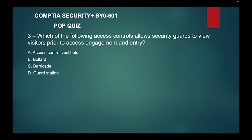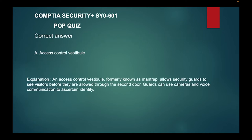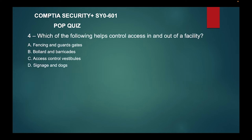Question three: which of the following access controls allows a security guard to view visitors prior to access engagement and entry? A) Access control vestibule, B) bollard, C) barricade, or D) guard station? The correct answer is A — access control vestibule. An access control vestibule, formerly known as a mantrap, allows security guards to see visitors before they are allowed through the second door. Guards can use cameras and voice communication to ascertain identity.